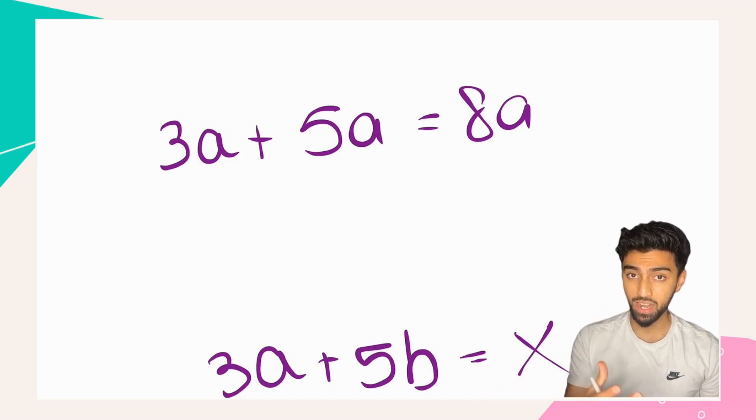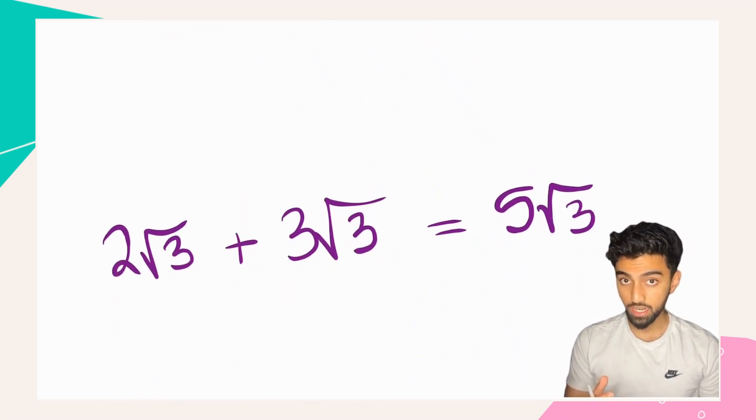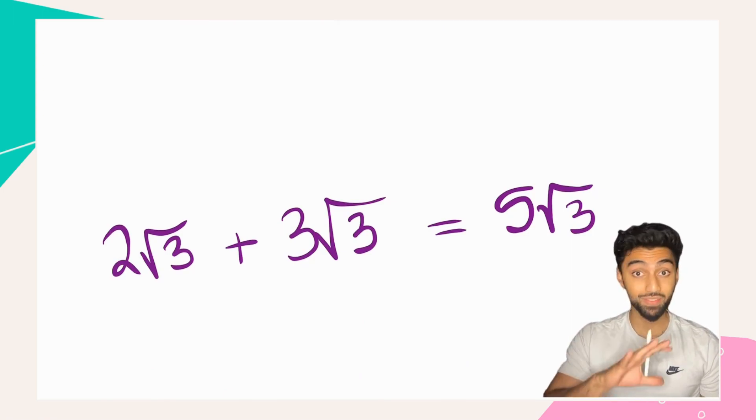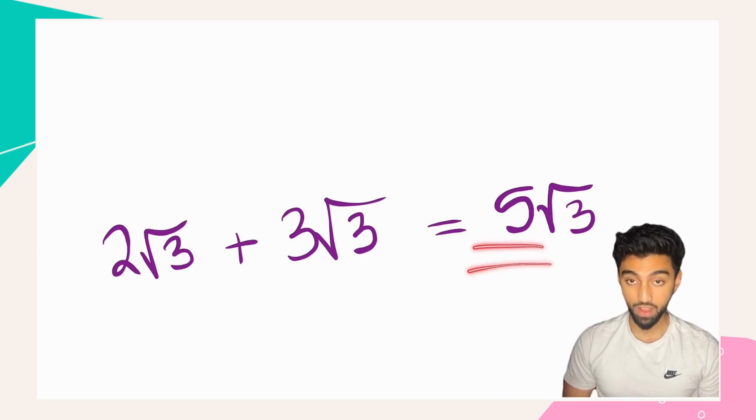The same principles apply when adding thirds. We can only add like thirds. For example, 2√3 add 3√3, we have the same third, so we go ahead and we add the coefficients to give 5 and then the root 3 just remains as it is.